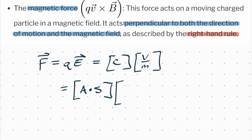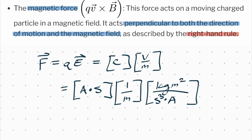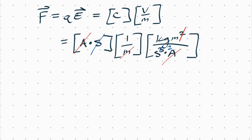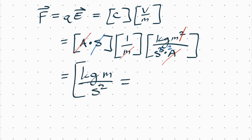We still have the one over meters in the denominator. One volt is a kilogram meter squared per seconds cubed times amps — a strange derived unit. The meters cancel, the amps cancel, and the seconds reduce, leaving us with kilograms times meters per second squared, which are of course units of newtons.